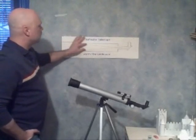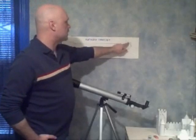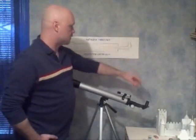So light comes in, is bent by that lens to a secondary lens, which is your eyepiece, and that's the eyepiece here.